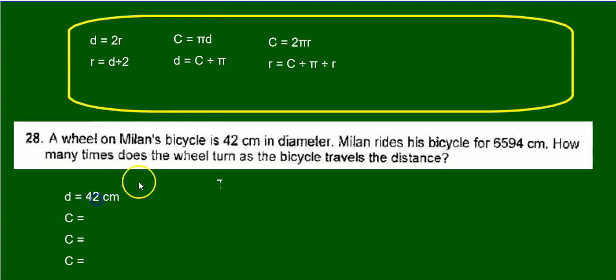Now each time the wheel turns, what is that? What does that mean? What distance do we travel when the wheel makes one turn? And that is the circumference. So what is the circumference of the circle? How much distance does the wheel travel after one turn?